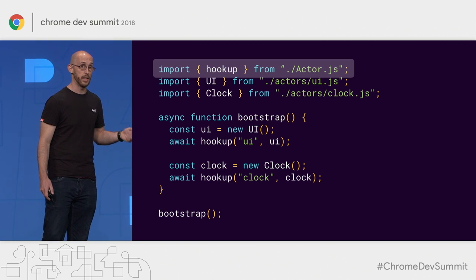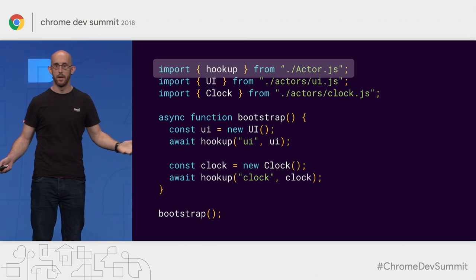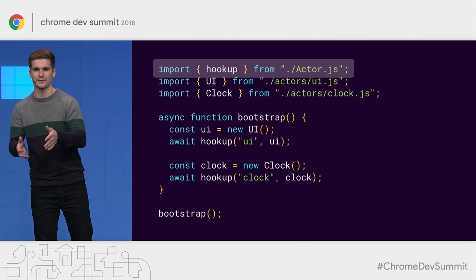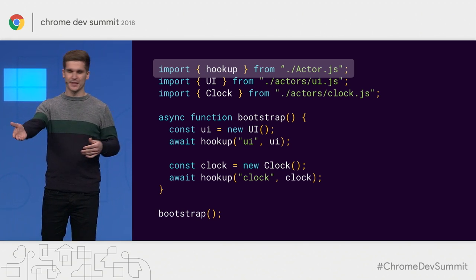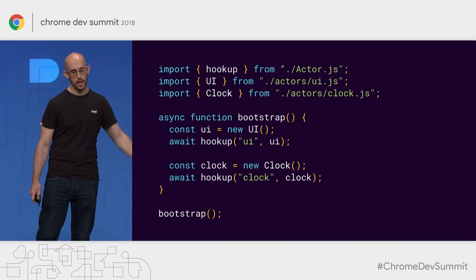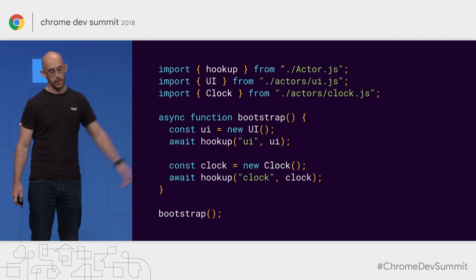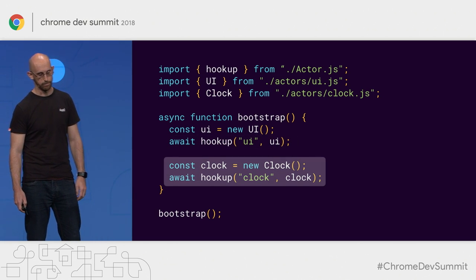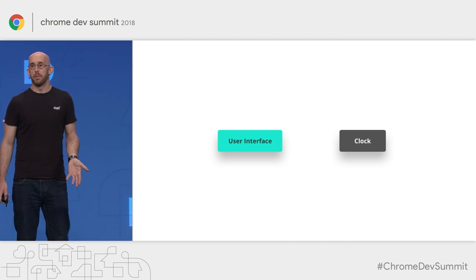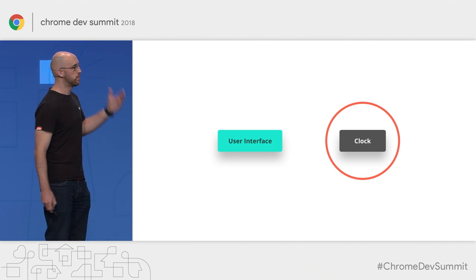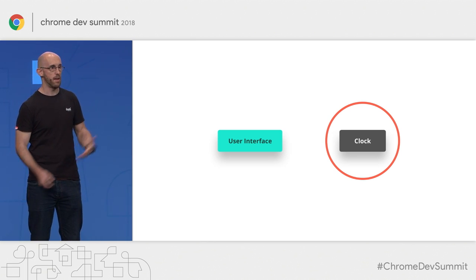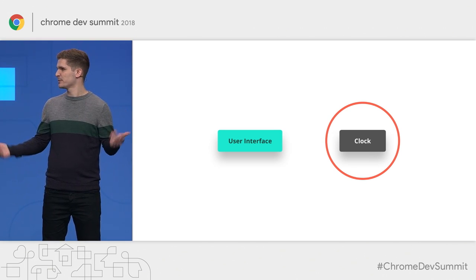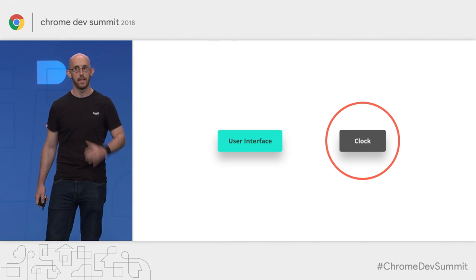So we have two actors: a clock one and a UI one. In the bootstrap, we instantiate our UI and hook it up, available under 'UI' as a string name, and the same with the clock. Now, for the clock itself — it's almost a pure data actor. It doesn't need to go near the DOM; it just wants to tick and pause. What do you need really? A setTimeout. We model this as a state machine. We start with a paused state, can transition to a running state. Every second we'll tick, go to the tick state, then back to running — ping pong, like a clock. We can pause and reset.